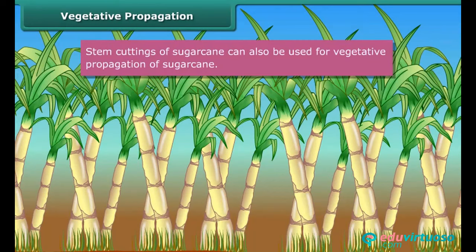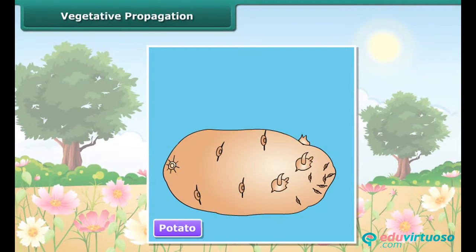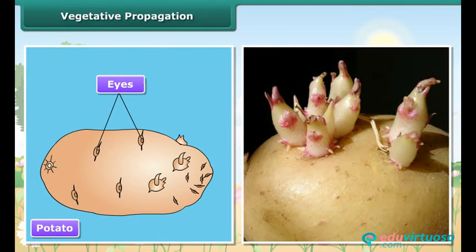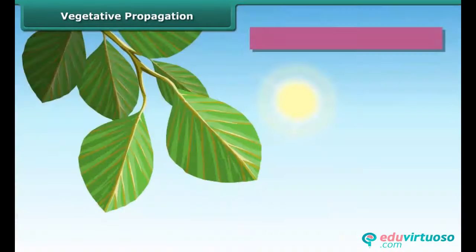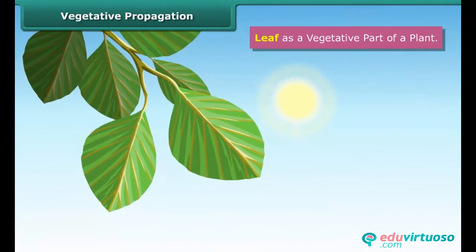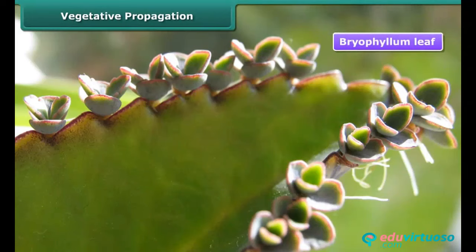These cuttings, if planted and watered, can produce new rose plants. Similarly, stem cuttings of sugarcane can also be used for vegetative propagation. Do you know potato is the edible stem of a plant? It bears small scars on it called eyes. These are the axillary buds. Each eye on a potato can give rise to new plants by forming a shoot above and root below. In plants like bryophyllum, the leaf is the vegetative structure that helps in vegetative propagation. Many small buds arising at the margins of the leaves, under suitable conditions, form new plants.